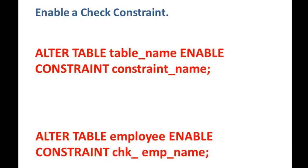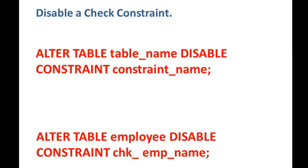The next operation is enabling a constraint. If you have created a table or used ALTER TABLE with the DISABLE option and now want to enable the constraint, simply use: ALTER TABLE table_name ENABLE CONSTRAINT constraint_name — for example, ALTER TABLE employee ENABLE CONSTRAINT chk_emp_name. Similarly, if you want to disable an enabled constraint, use: ALTER TABLE table_name DISABLE CONSTRAINT chk_emp_name. Today I'm going to show all of this in Toad for Oracle 9.0 — I'll create a table with constraints, test it, and show you how it works.